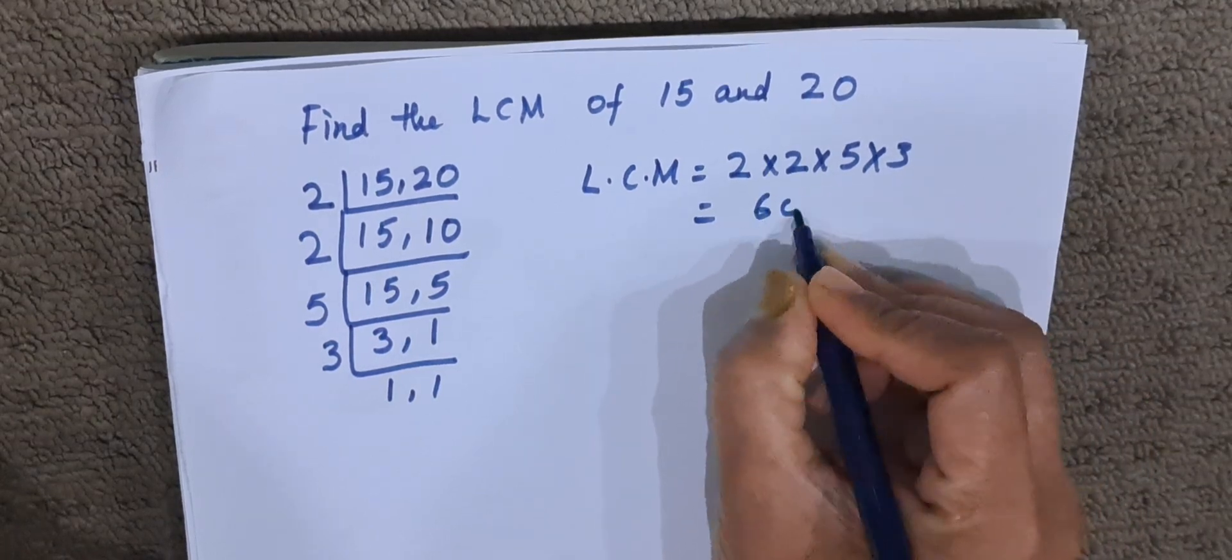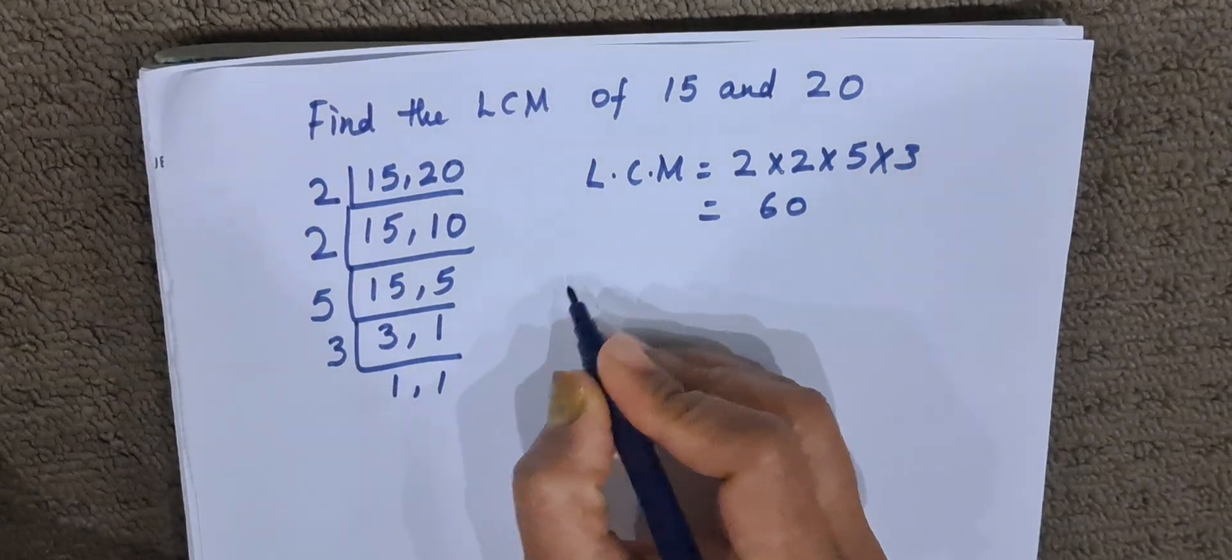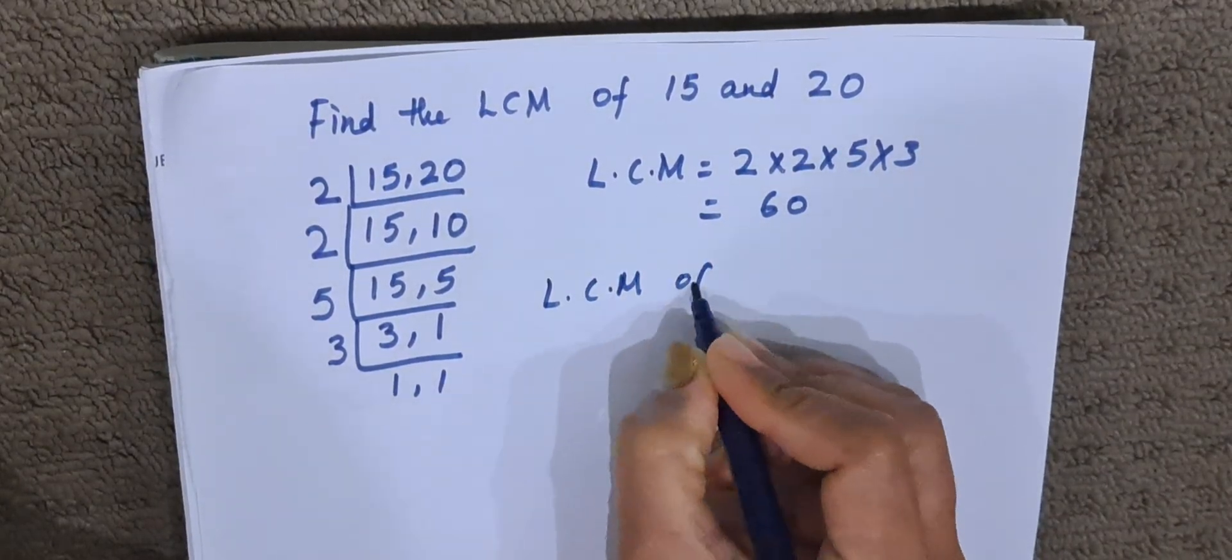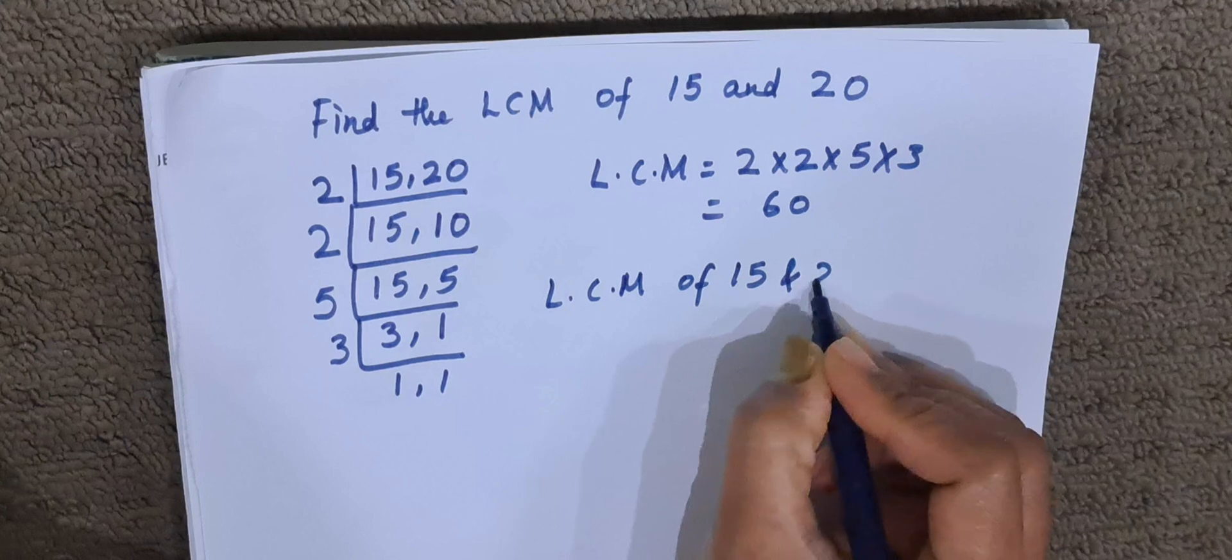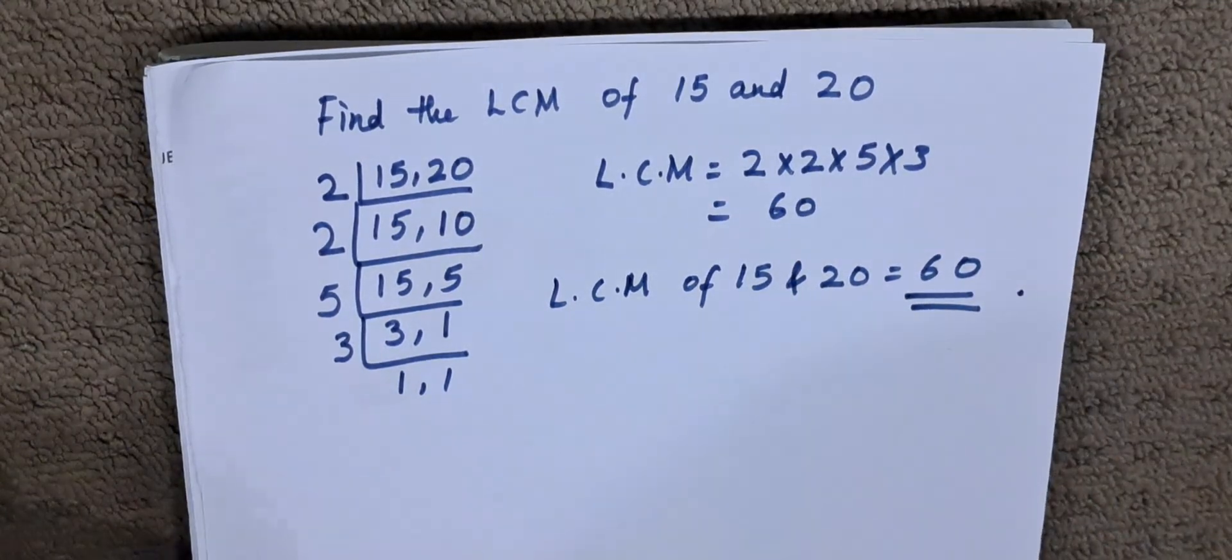60 is the LCM. So we will write it down: LCM of 15 and 20 is 60. This is the answer.